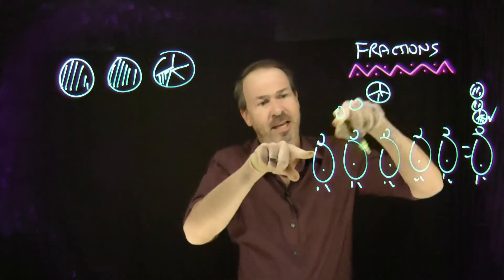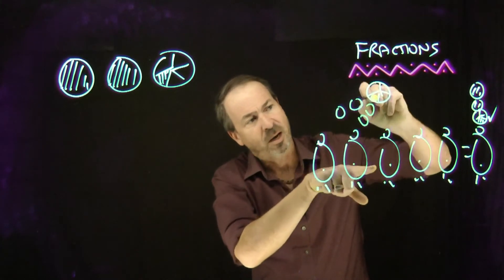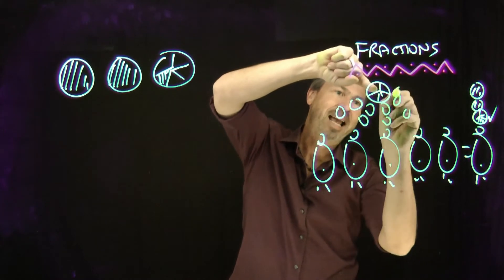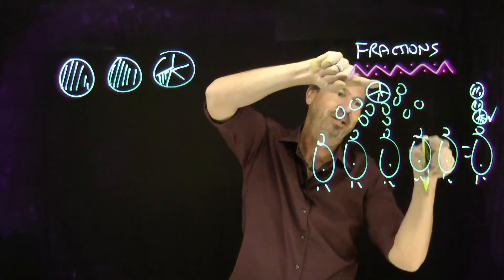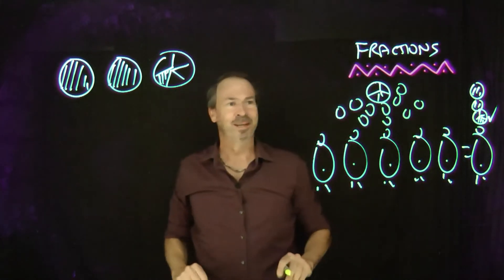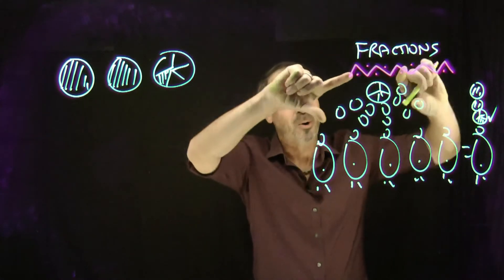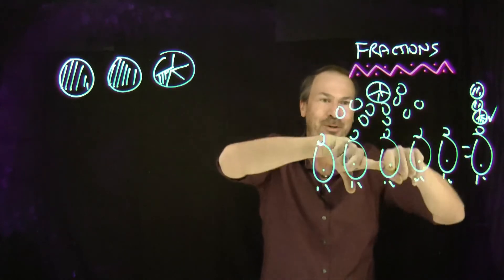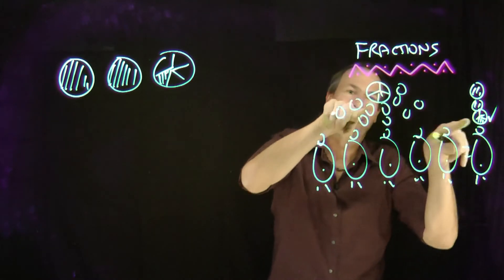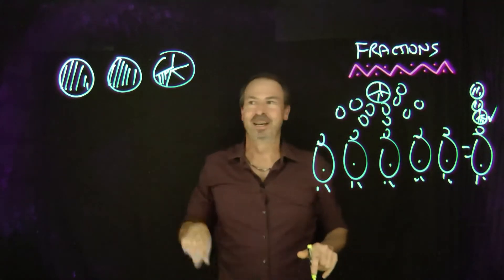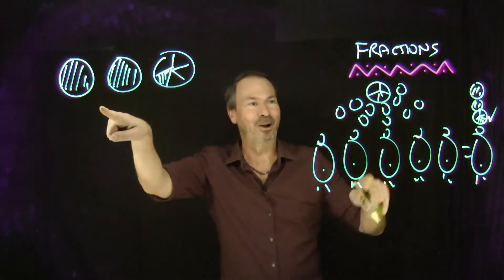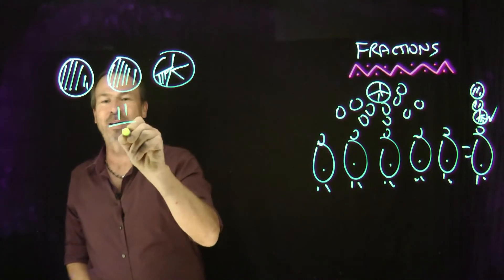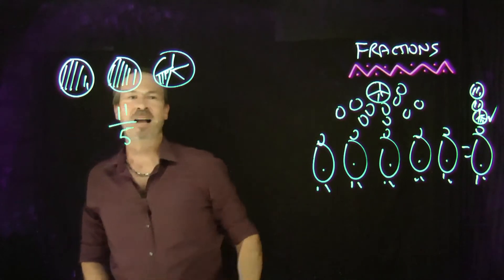This student gets two whole pies, this student gets two whole pies, this student, this student, and this student — each gets two whole pies. So the number of pies I need is all that: two whole pies per student plus a portion of pie for each student. That is eleven pies being shared equally among five students.